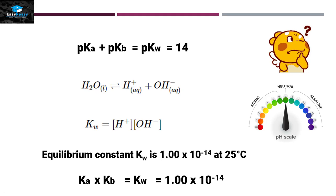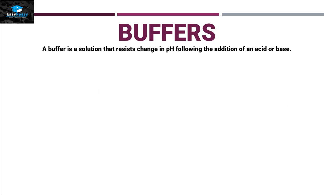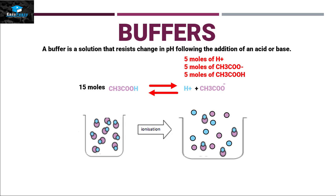With all this information, this is the right point to explain buffers. A buffer is a type of solution that resists change in pH when an acid or a base is added to it. For example, taking 15 moles of acetic acid — a weak acid — it dissociates into 5 moles of H⁺ ion, 5 moles of acetate ion, and 5 moles of acetic acid remain unchanged. In this picture, H⁺ ions are represented in blue and acetate ions in purple.